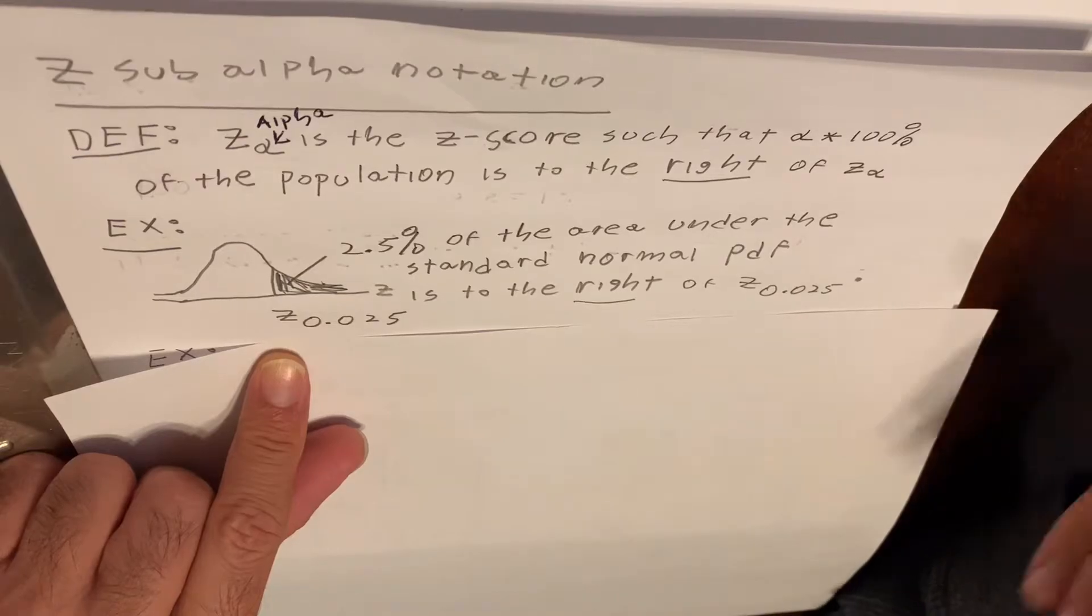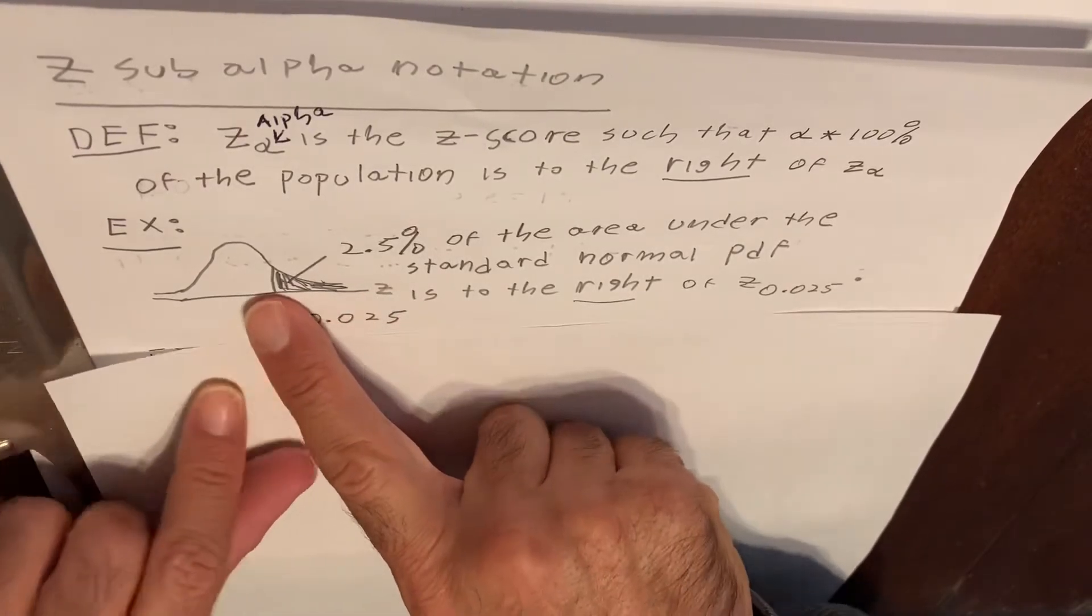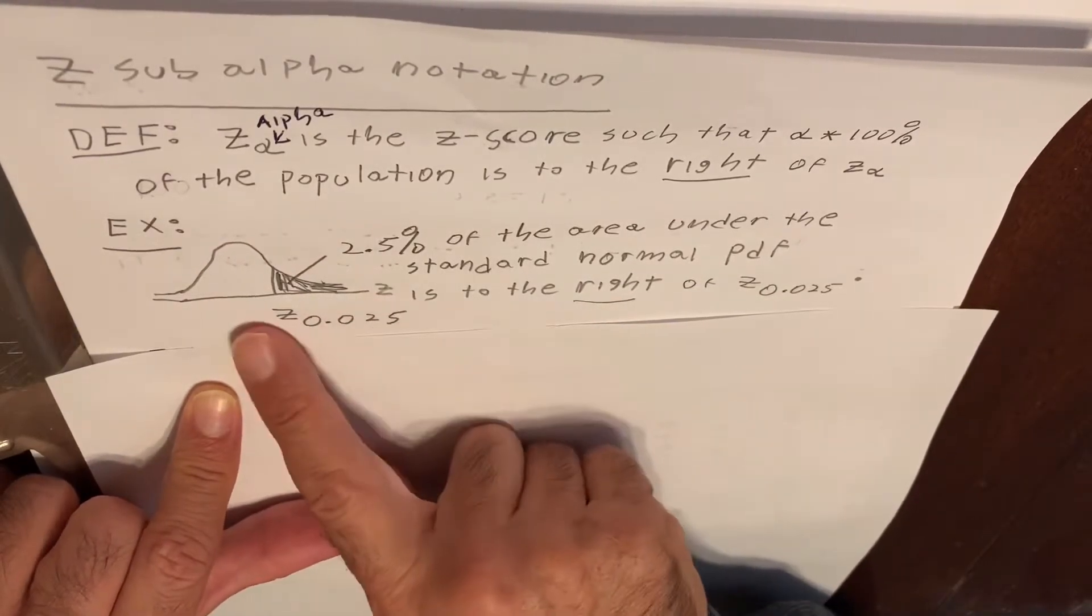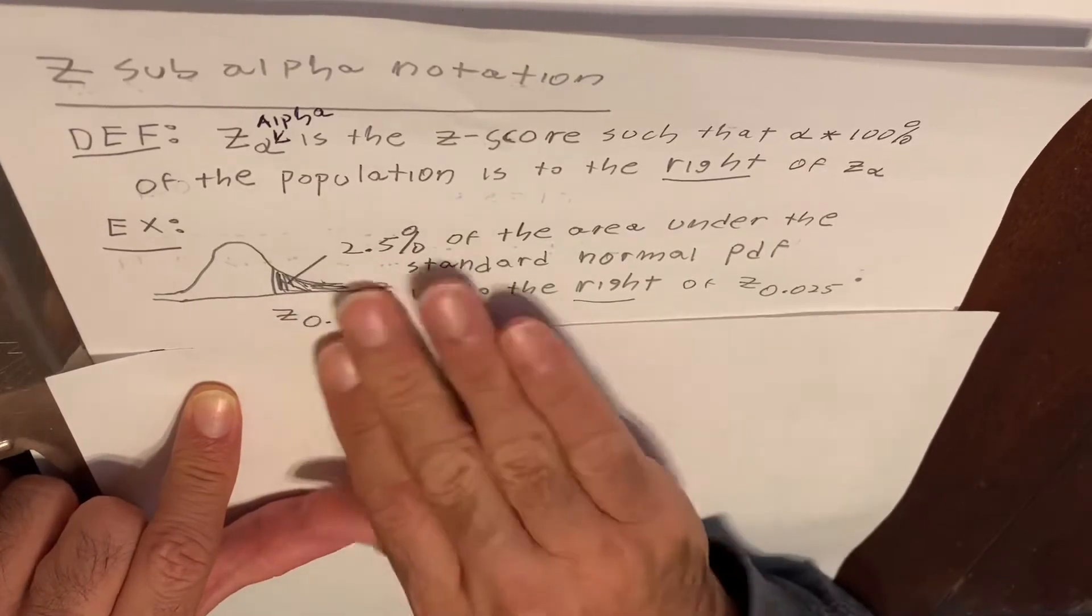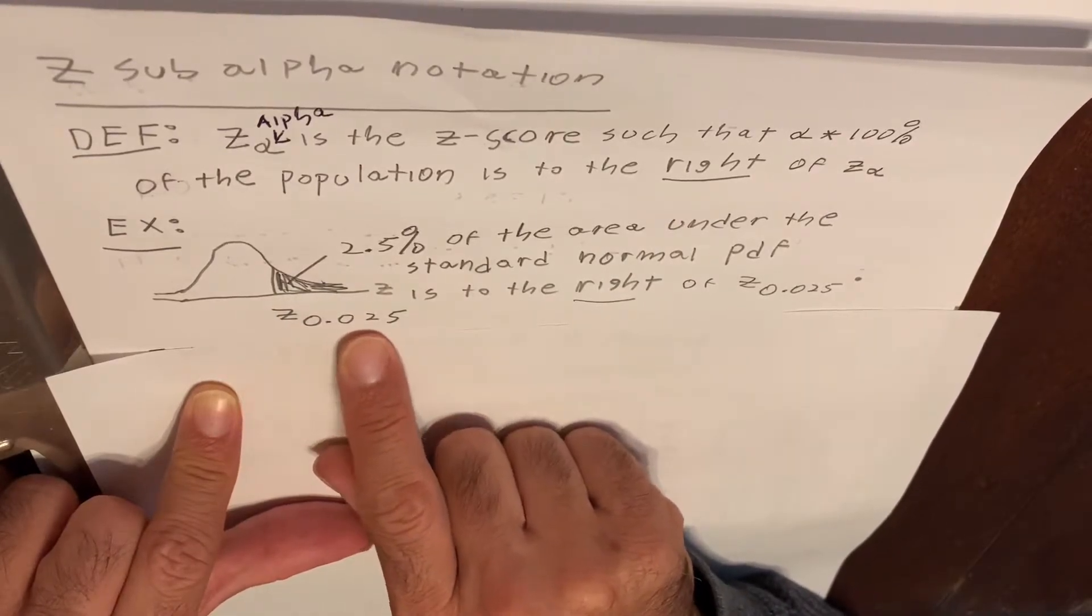There's also a CDF, which you probably will need to know also. But in any case, this bell-shaped curve is a probability density function. And if we have 2.5% of the area to the right of a Z score, we call this Z sub 0.025.